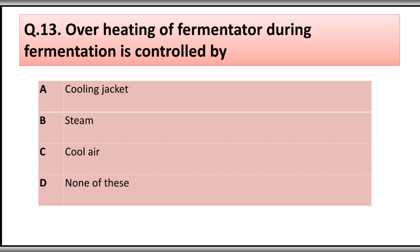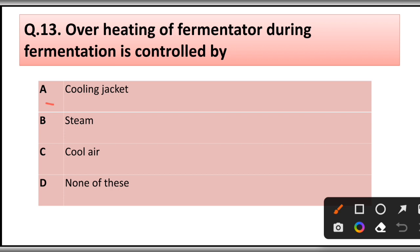Question number thirteen: Overheating of the fermenter during fermentation is controlled by: A) cooling jacket, B) steam cooler, C) none of these. The correct answer is option A, cooling jacket.